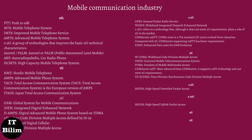1G standards included NMT (Nordic Mobile Telephone), AMPS (advanced mobile phone system), and TACS (total access communication system), which is the European version of AMPS, and JTACS (Japan total access communication system). 2G refers to second generation wireless telephone based on digital technology. 2G networks are basically only for voice communications, with the exception that some standards can also use SMS messages as a form of data transmission. 2G standards included GSM (global system for mobile communications), iDEN (integrated digital enhanced network), D-AMPS (digital advanced mobile phone system based on TACS), CDMA (code division multiple access defined by IS-95), PDC (personal digital cellular), and TDMA (time division multiple access). 2.5G is a set of transition technologies between 2G and 3G wireless technologies.